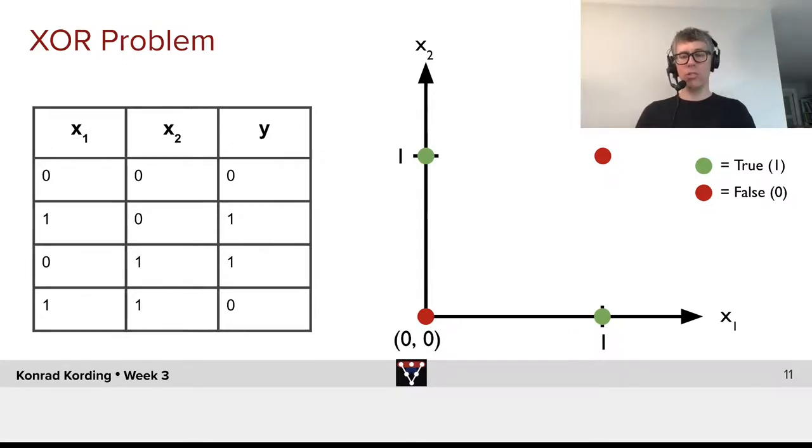there cannot be a linear solution to that. The only solution would be to have a hat in this space. And linearly, that's just not possible.